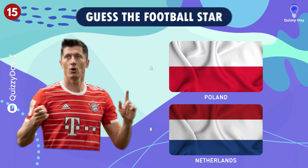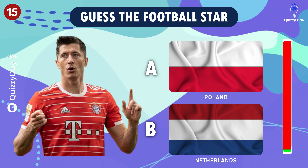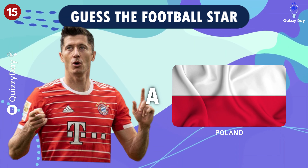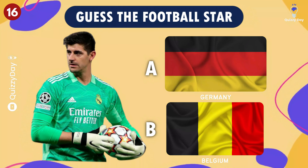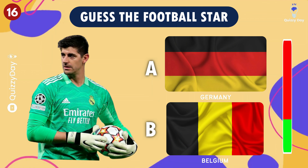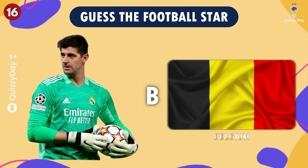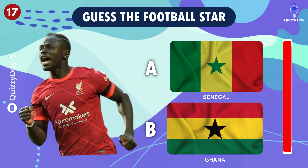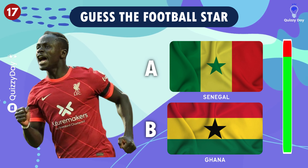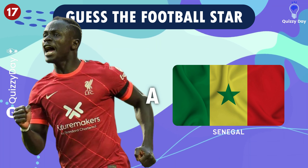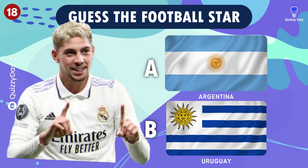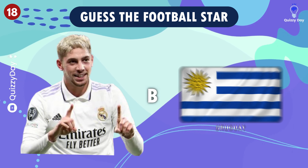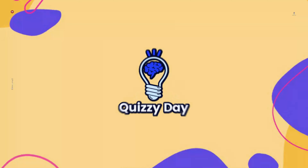Question number 15. Poland. The next question is — correct, Belgium. How about this football player? You got it! Senegal. Question number 18, it's letter B, Uruguay.